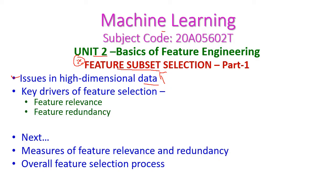Before selecting the subset, we need to consider the key drivers of feature selection — that is, feature relevance and feature redundancy. Relevance means the related features, and redundancy means the repeated features, so we need to remove those things. In the next class, we will see the measures of feature relevance and redundancy and overall feature selection. In today's class, we will see feature subset selection.